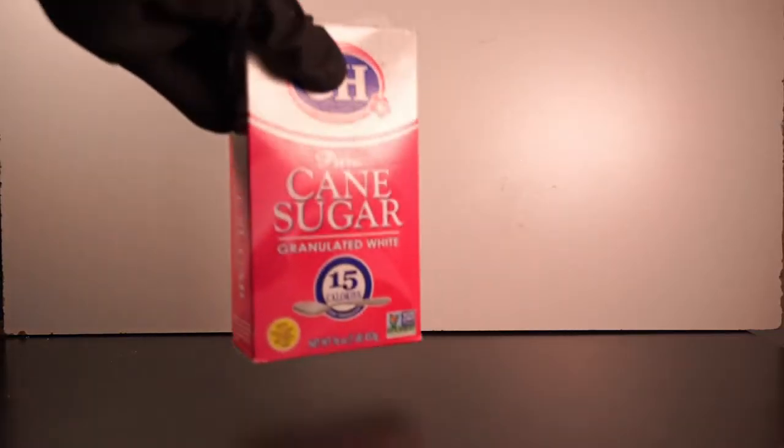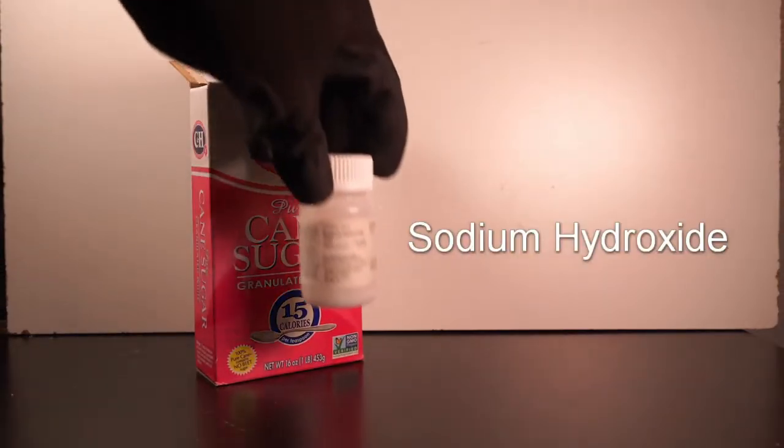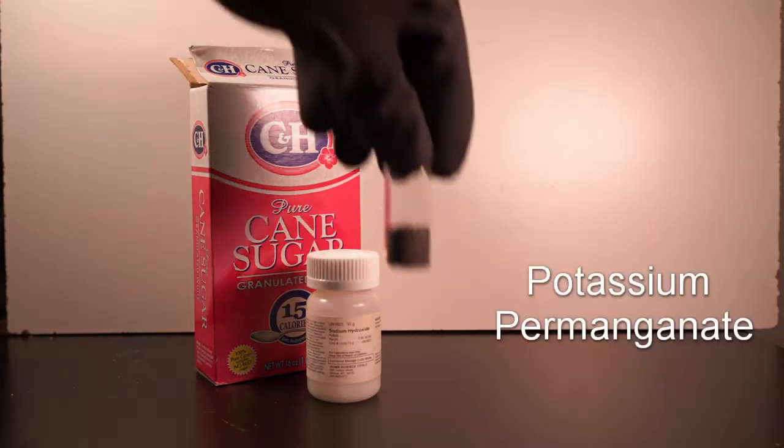For the chameleon chemical reaction, you will need cane sugar, sodium hydroxide, and potassium permanganate.